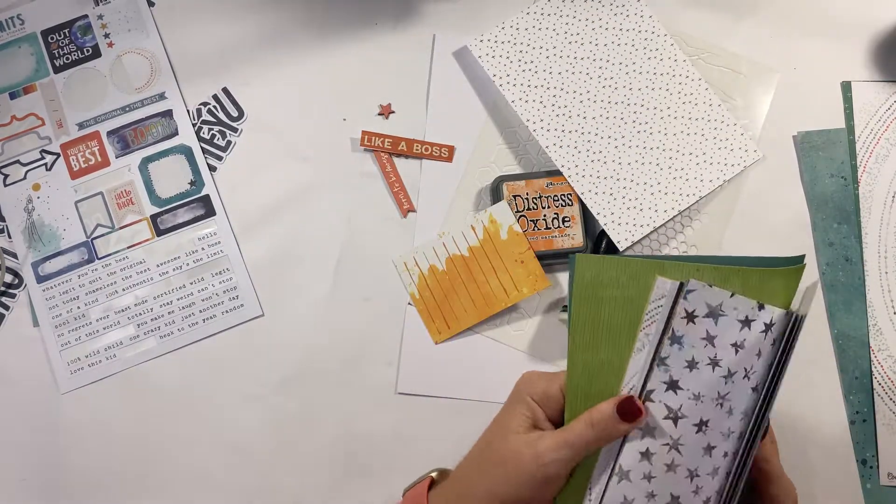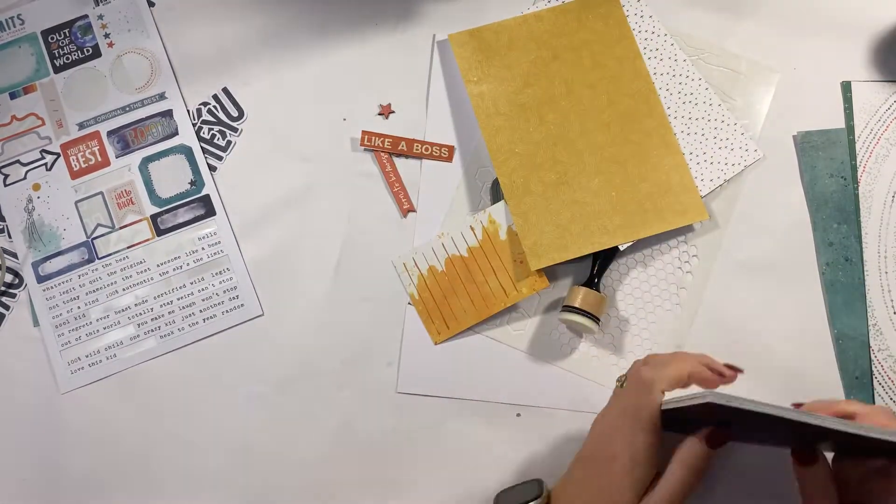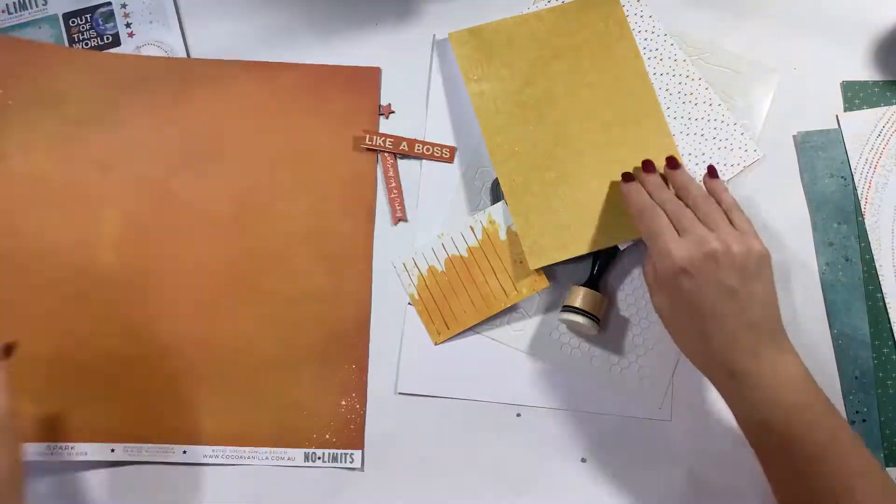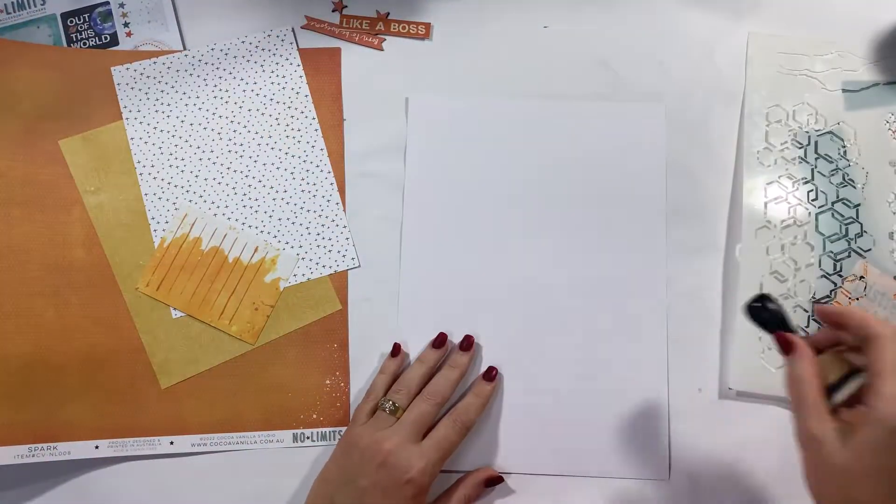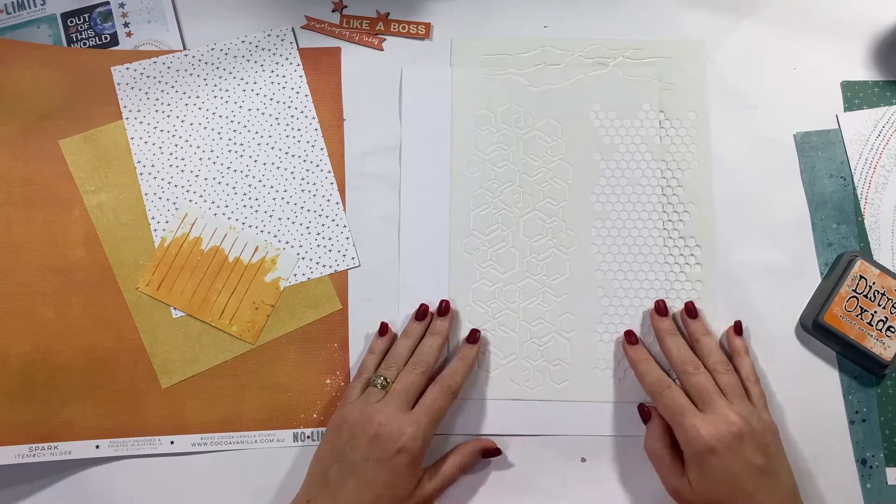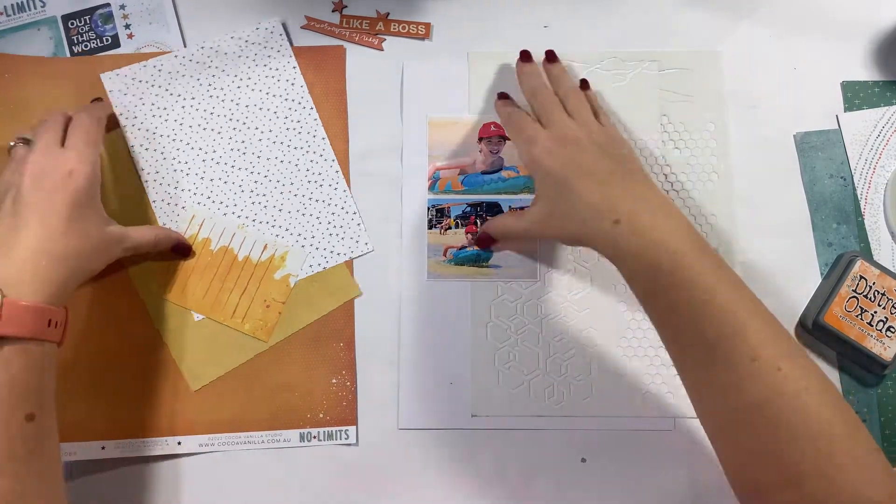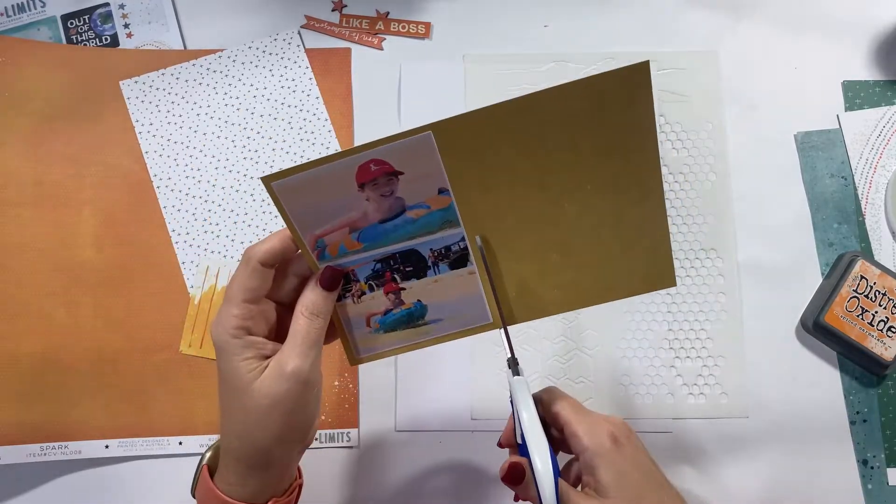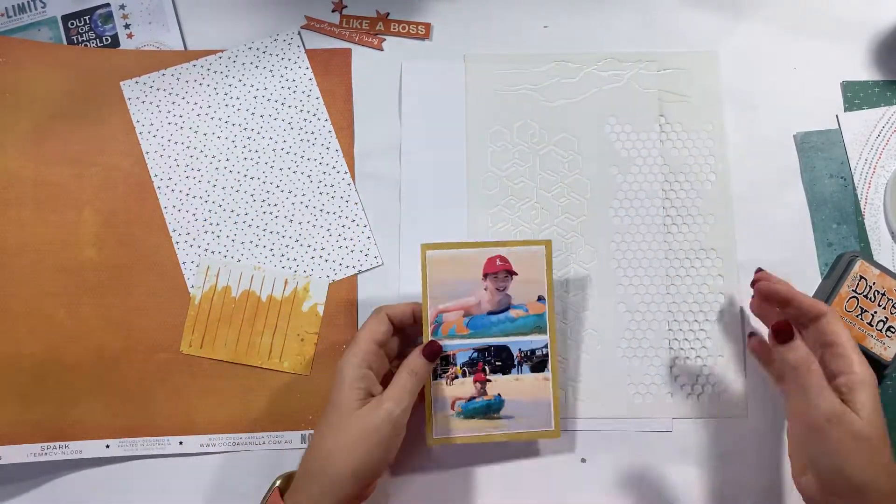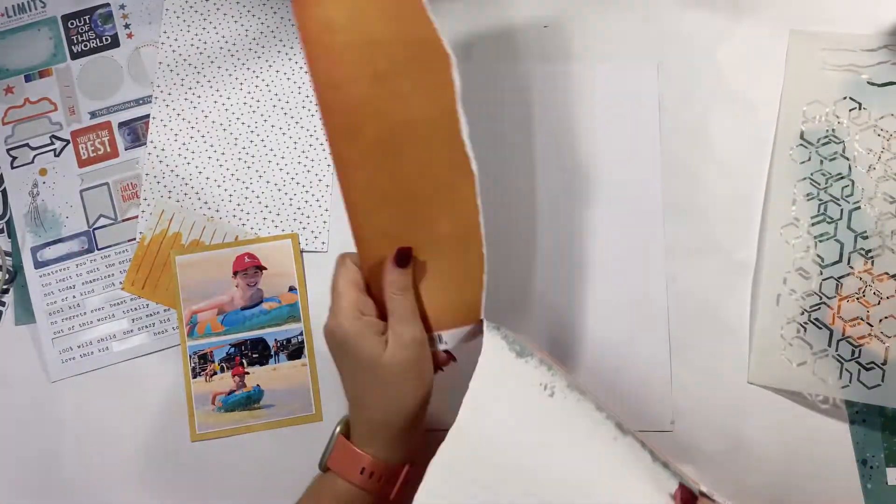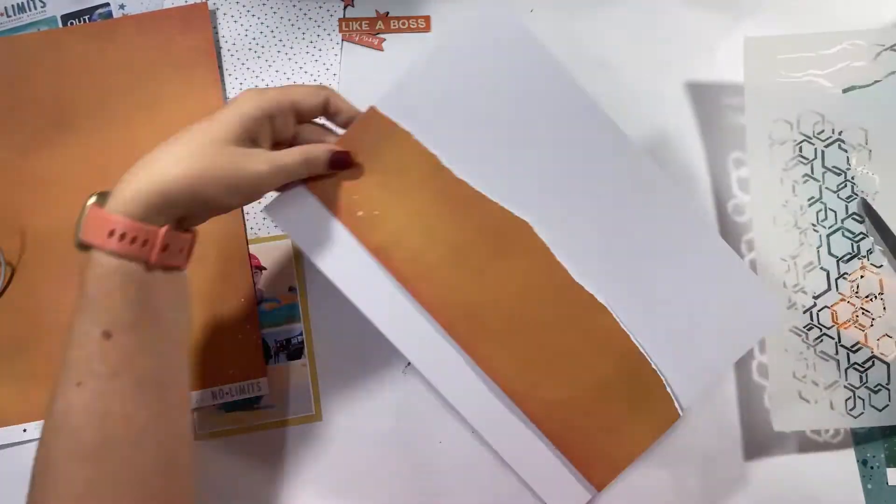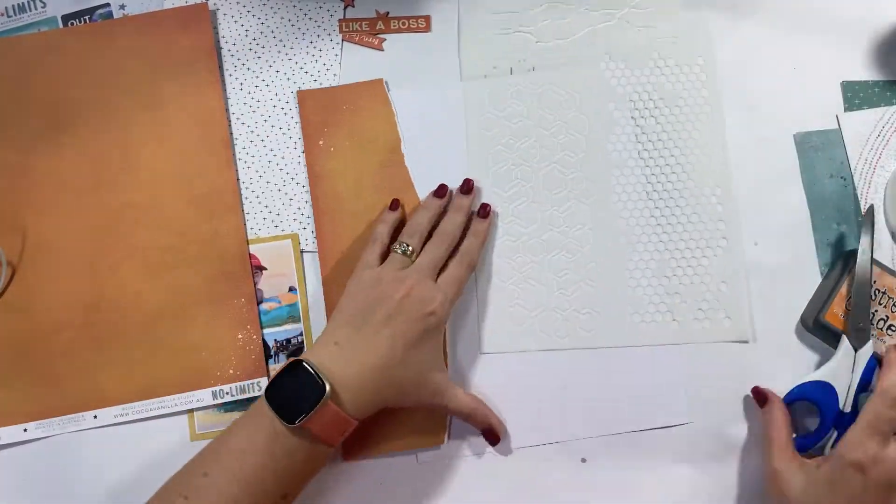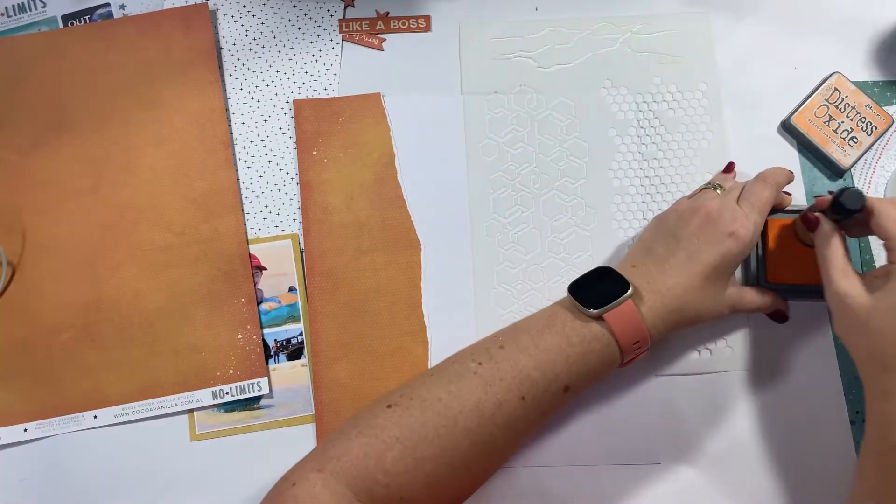Now I am using the Coco Vanilla Studio No Limits Collection which has some gorgeous orange elements, and I'm teaming it with this Be Arty stencil. I'm going to use my distress inks through the stencil firstly to create that sort of honey hive background, and then I'm going to add all of these orange elements to help enhance my photos.